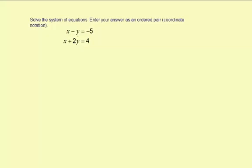You have x minus y equals negative 5, and x plus 2y equals 4. What we're trying to do is make it so the coefficients of either the x or the y have the same value but opposite signs. You have a couple different ways you can do this. One way is you can multiply one of the equations by negative 1.